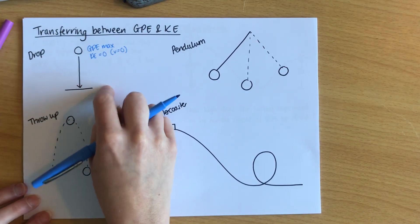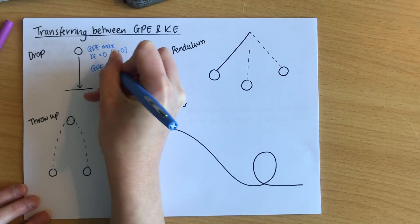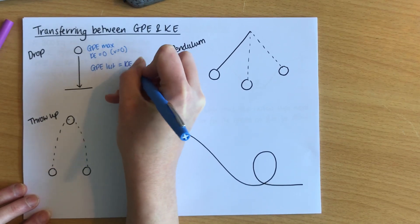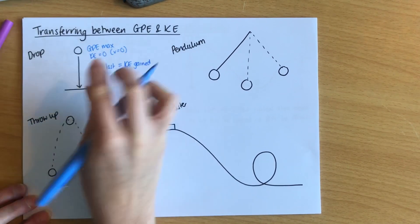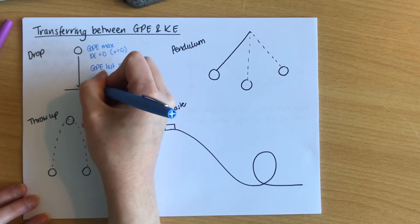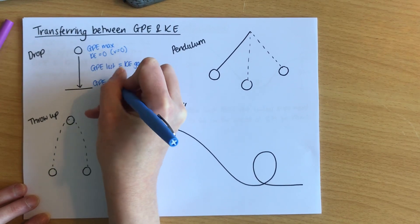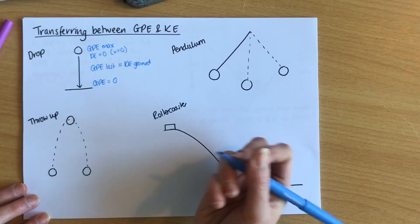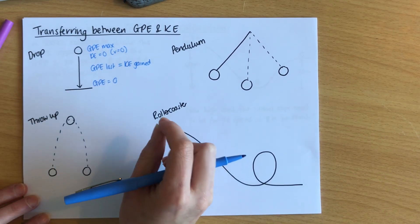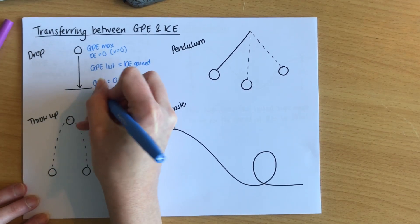As the object falls, that GPE is lost and it converts — it's transferred into kinetic energy. We often write this equation: the GPE lost equals the KE gained as it falls down. At the bottom, the GPE just before it hits the ground is zero, because GPE equals MGH, and when it's at the ground it has no height. If there's no height, it has no GPE. But all that GPE that's been lost has turned into kinetic energy.